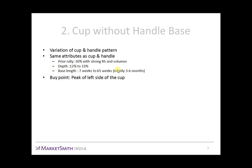Now the next pattern is cup without handle base. It's a variation of the cup and handle pattern. As the name implies, it's essentially the same except it does not have a handle. All the attributes except for the buy point are identical — that is, a prior rally of 30% with strong relative strength and volumes, a depth or correction of 12% to 33%, and base duration ranging from 7 weeks to 65 weeks. The buy point in a cup-shaped base is the peak on the left side of the cup, which was the most recent area of resistance.